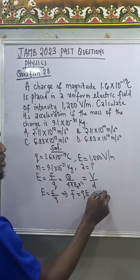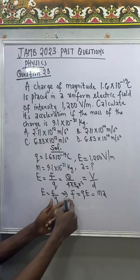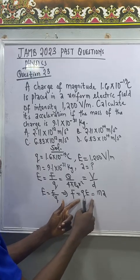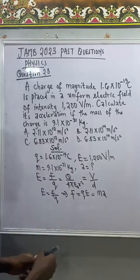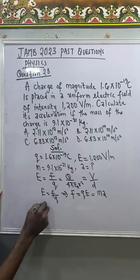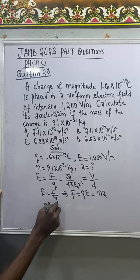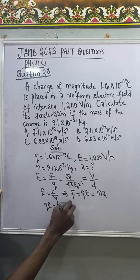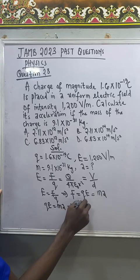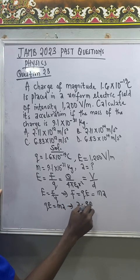That means the same force that is equal to q E here is also equal to m a. Now let's take this part of the equation: q E equal to m a. If I make a the subject of formula, that means a will be equal to q E all over m.